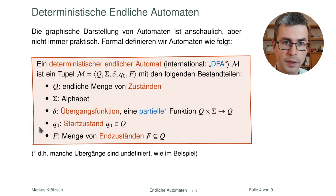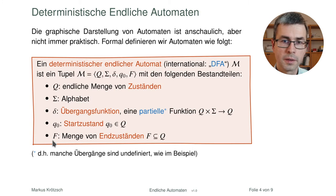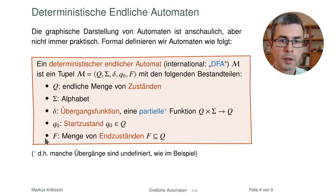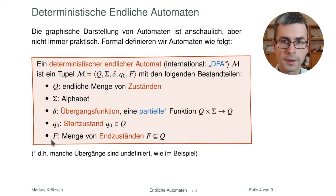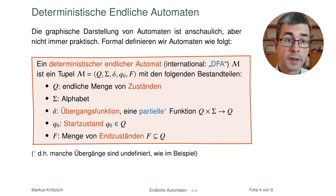Dann benötigen wir einen klar definierten Startzustand q0. Und schließlich eine Menge F von Endzuständen — man darf auch mehr als einen haben. Beim Startzustand muss es genau einer sein, sonst wäre unklar, wo wir beginnen. Bei den Endzuständen darf man mehrere erlauben — alle diese Zustände akzeptieren dann. F steht natürlich für 'Finalzustand'.